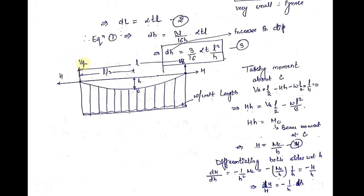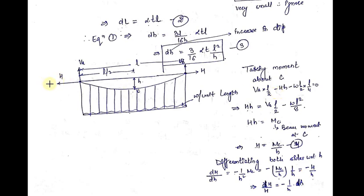VA is acting upward, so it will produce a clockwise bending moment about C, and the perpendicular distance of VA from C is L/2. So, plus VA into L/2. The horizontal thrust H will act on C in the anticlockwise direction, producing an anticlockwise bending moment. So minus H, and the perpendicular distance of the line of action of capital H from point C is small h. So minus H into h.